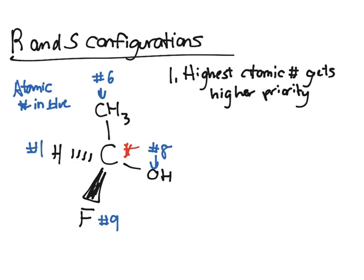And so the highest atomic number gets a higher priority. So when it comes to this, this fluorine will be number 1 because it's the highest atomic number. The oxygen here will be number 2. The carbon here will be number 3. And the hydrogen here will be number 4 in ranking the priority.